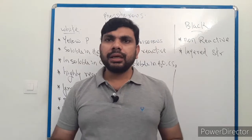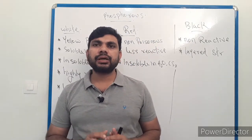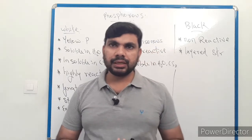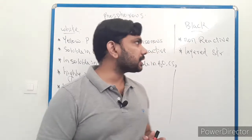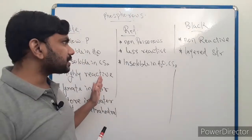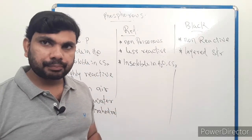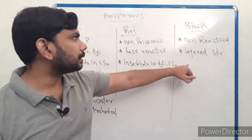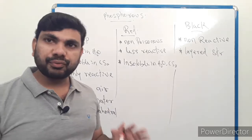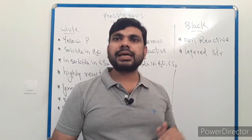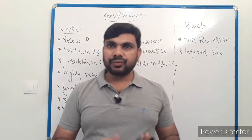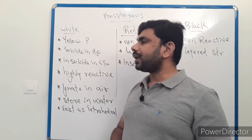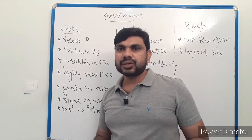Welcome to chemistry class. In this video we will discuss different types of phosphorus: white phosphorus, red phosphorus, and black phosphorus. Remember the order: white, red, black.